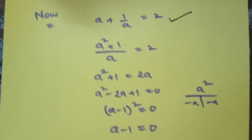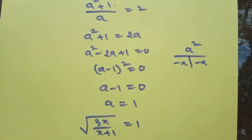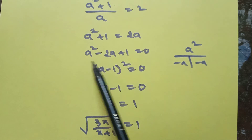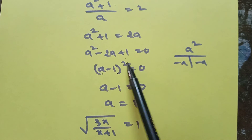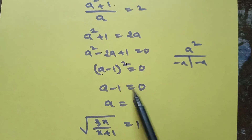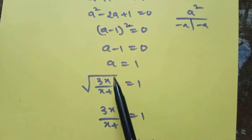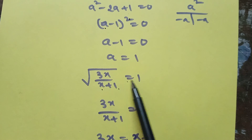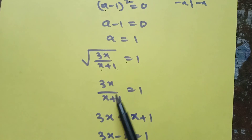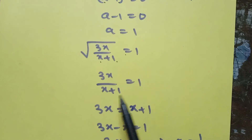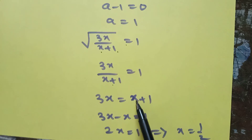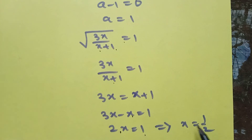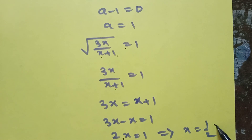Sending a to the right side gives a squared plus 1 equals 2a. Rearranging: a squared minus 2a plus 1 equals 0, which is (a minus 1) squared equals 0, so a = 1. Since a equals the square root of (3x divided by x+1) equals 1, squaring both sides: 3x divided by (x+1) equals 1, so 3x equals x plus 1, giving 2x equals 1, therefore x equals 1 by 2.